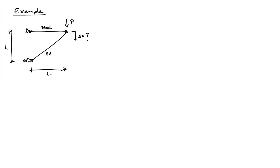In this problem we're going to look at an example that is a bit more interesting than the one we just did. Here I have a two-bar truss. One bar is steel, the other one is aluminum, and it's subjected to a vertical load P at one of the nodes. I'd like to find the relationship between the applied load and the downward motion at that node.